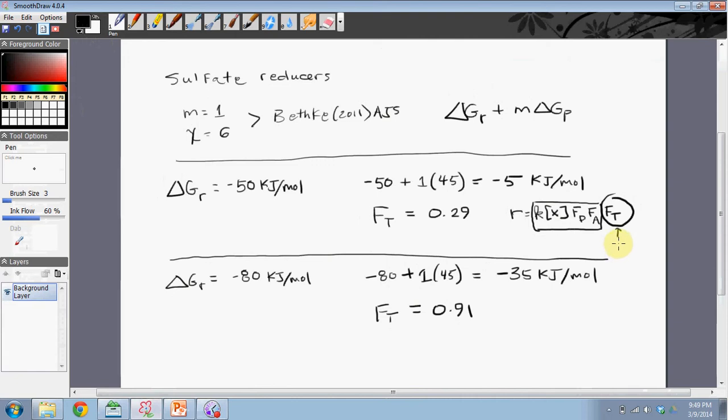So that means that in this case, this is very close to 1, so it really doesn't have a huge impact on the rate that you get when you take into consideration all these other factors. So under these conditions, the rate of the microbial reaction is affected relatively little by thermodynamic controls.